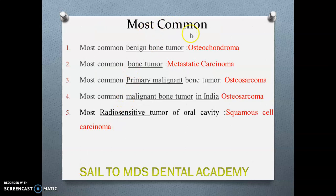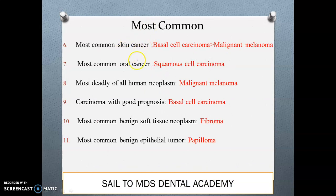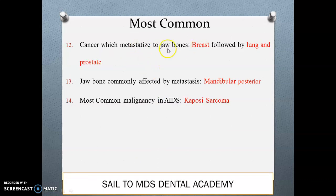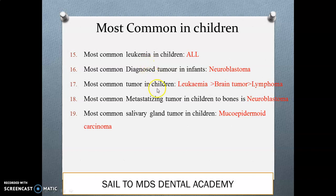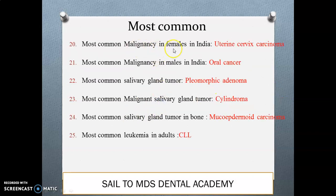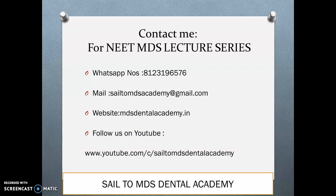Now a few important 'most common' facts in oral pathology to remember: most common benign bone tumor; most common primary malignant bone tumor; most common malignant bone tumor in India; most common radiosensitive tumor; most common skin cancer; most common oral cancer; most common deadly neoplasm with good prognosis; most common brain soft tissue neoplasm; most common brain epithelial tumor; most common metastatic cancer to jaw bones; most common malignancy in AIDS; leukemia in children; tumors in infants and children; most common salivary gland tumor; most common malignancy in females and males in India; and most common leukemia in adults. Focus carefully on the underlined words for these.